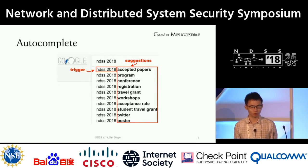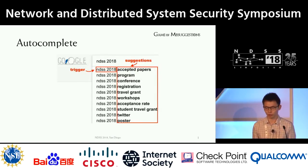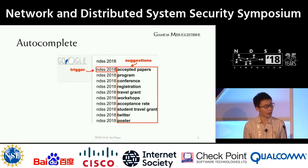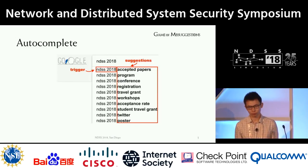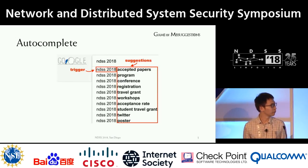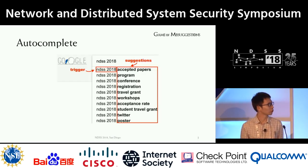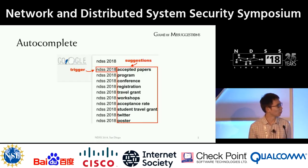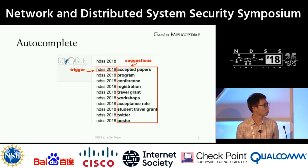So first of all, let's look at what autocomplete is. It is a functionality provided by service providers. Here we take Google as an example. Before a user finishes typing a query, there will be a list of suggestions show up below the search box. In this presentation, I will call the keyword the user types the trigger, and the predictions the suggestions.